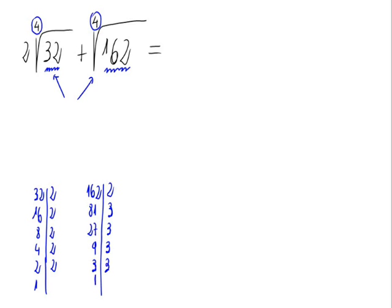So 32 is equal to 2 raised to 5, and 162 is equal to 2 times 3 to the 4th. And now as the index is 4, let's try to express every factor as powers with exponent 4.